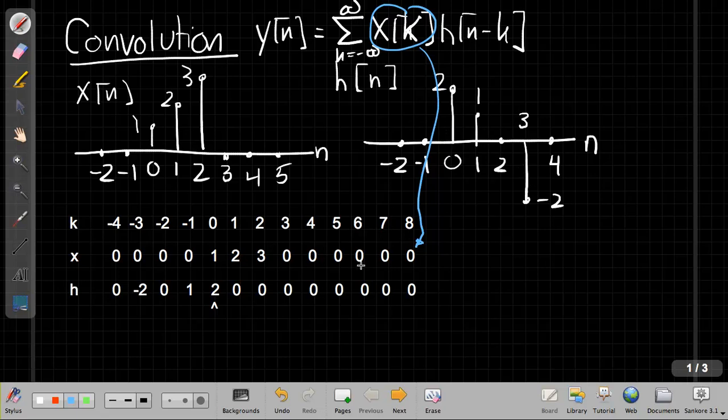And then the second row is the h values, but they've been flipped in time, right? So where this one went 2, 1, 0, minus 2, starting at time 0, it now goes, it reads that going backwards. So 2, 1, 0, minus 2. So right now,